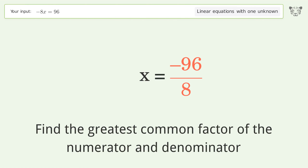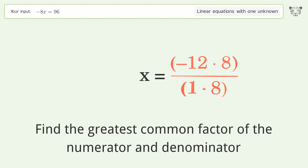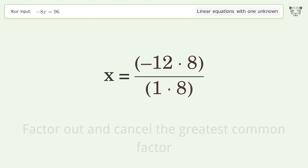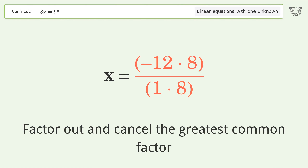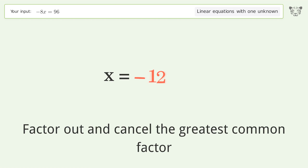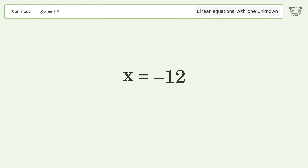Find the greatest common factor of the numerator and denominator, factor out and cancel the greatest common factor. And so the final result is x equals negative 12.